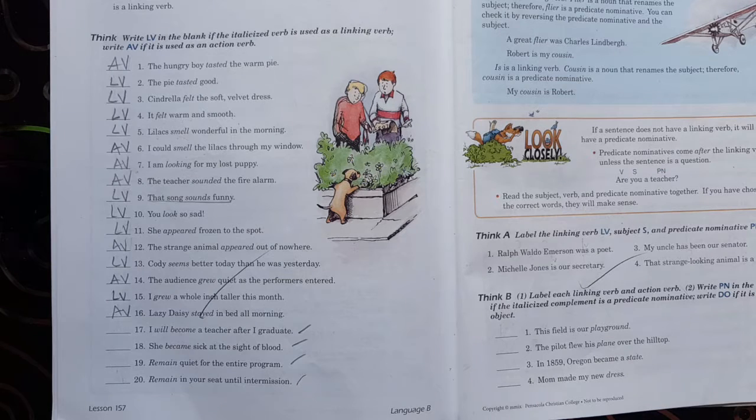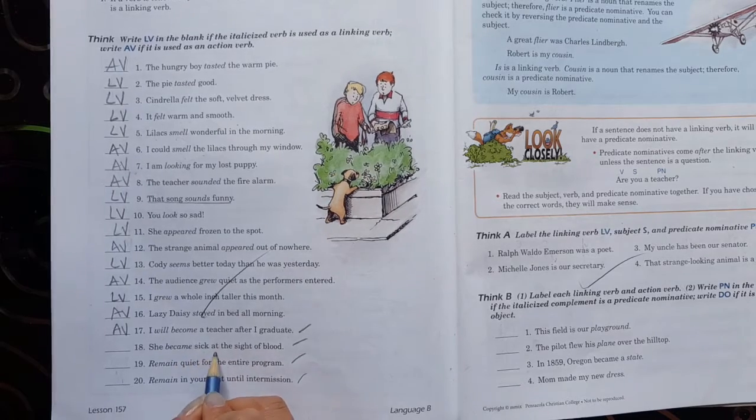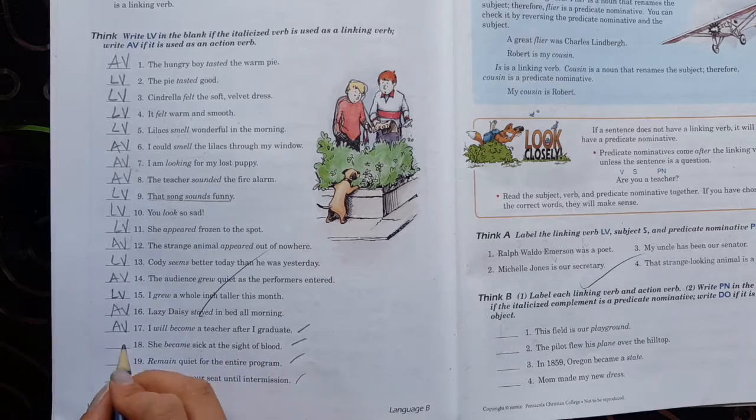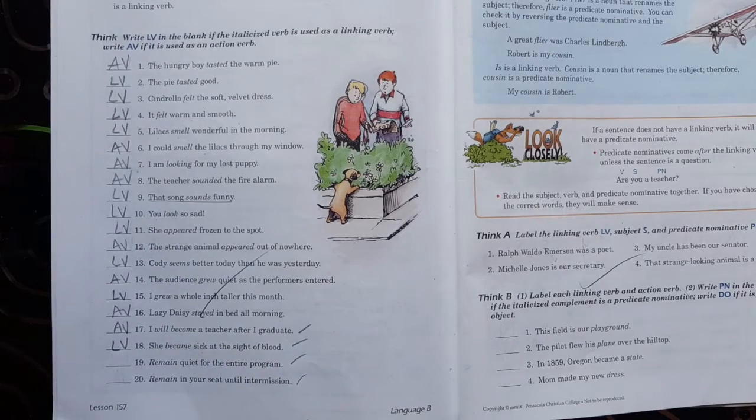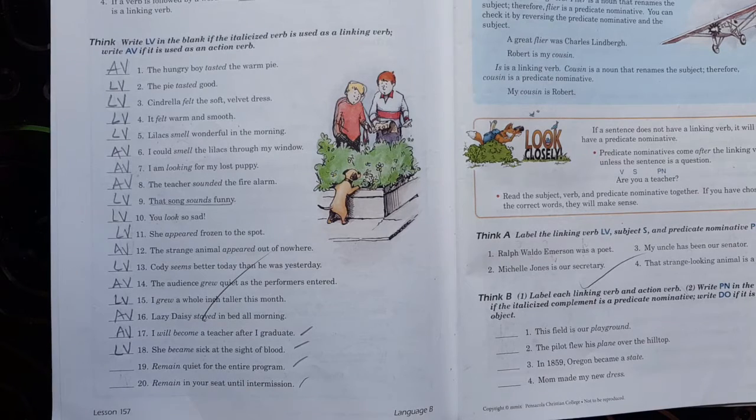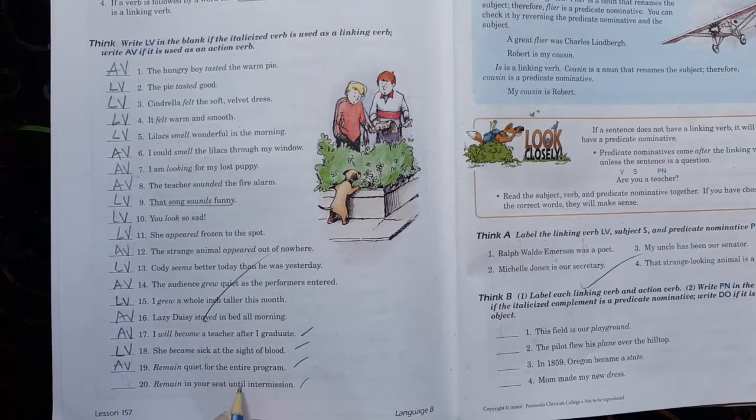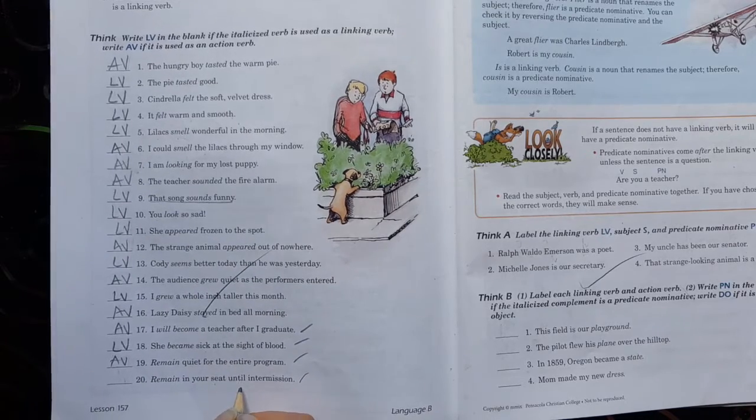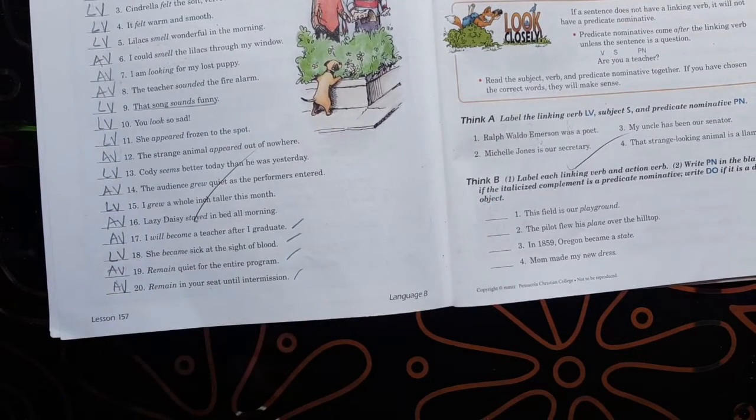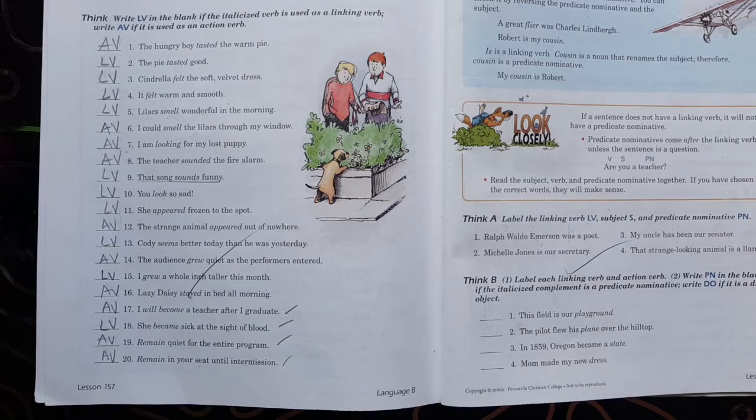Y ustedes hacen el diecisiete, diecinueve y veinte. Rápidamente determinen si es un linking verb o un action verb. Rápidamente. Yo llegaría a ser profesor después de que me gradúe. Pues es una acción. Llegaría a ser. Ella llegó a estar enferma de la sangre. Ya se sintió enferma de la sangre. Ese es un linking verb. Recuerda estar quieto para el programa entero. Remain. Action verb. Y recuerda estar en tu silla hasta la transmisión. Action verb. Entonces ahí simplemente tú tienes que determinar cuándo es una acción y cuándo es que está describiendo algo. Fácil, ¿cierto? Very good. So, thank you guys for your time. And I will see you in the next video. Bye, bye.